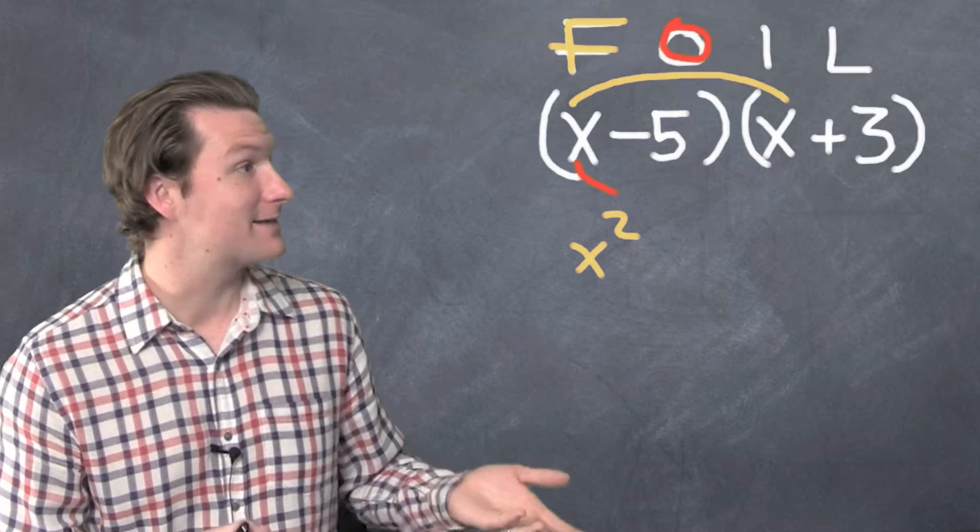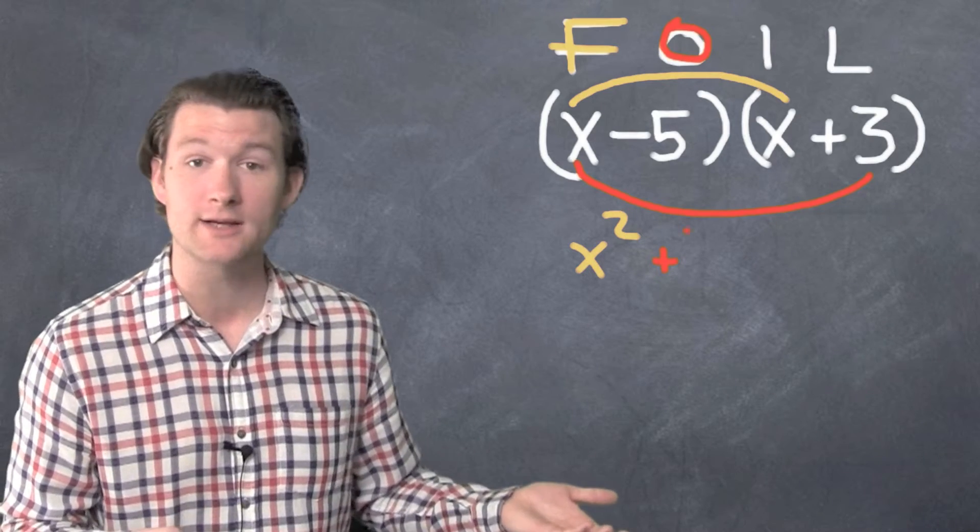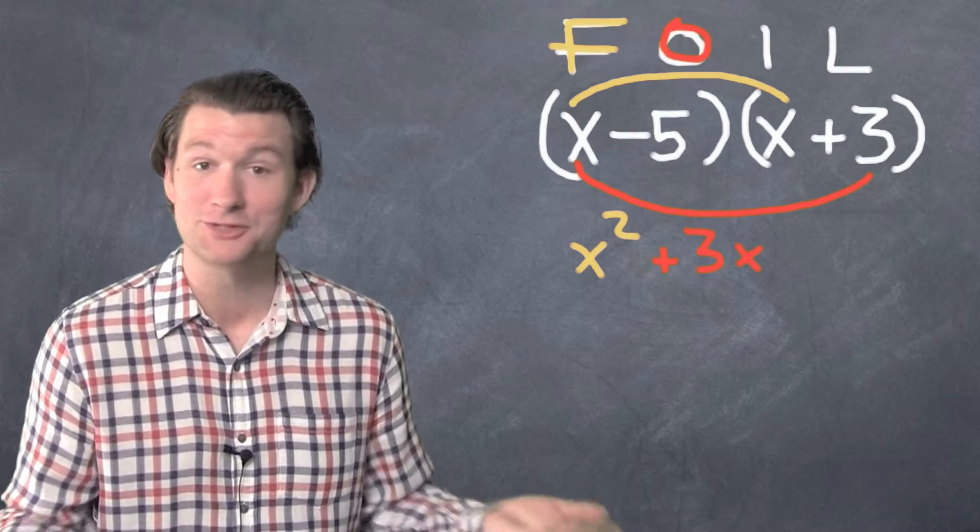Outsides. We've got X and plus three. X times positive three is 3X. So we've got the outsides done now, too.